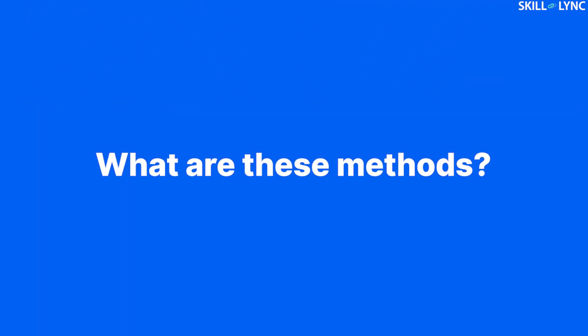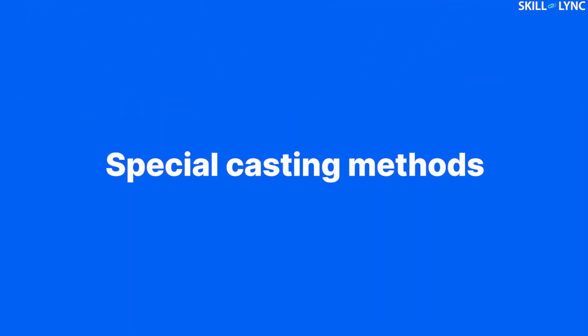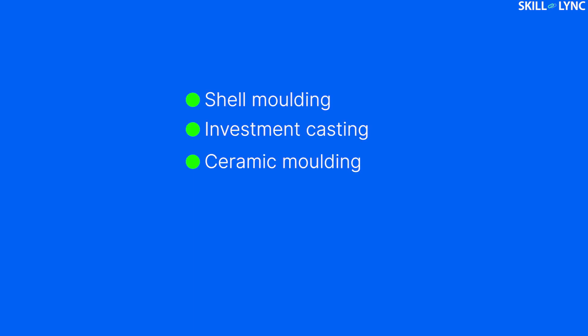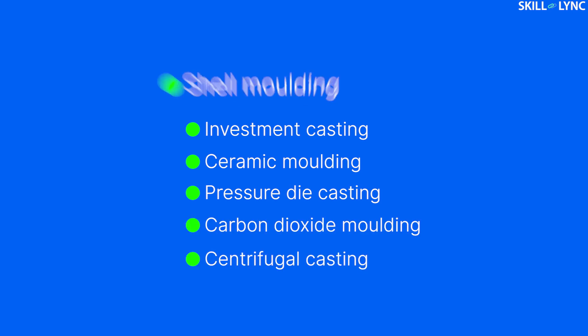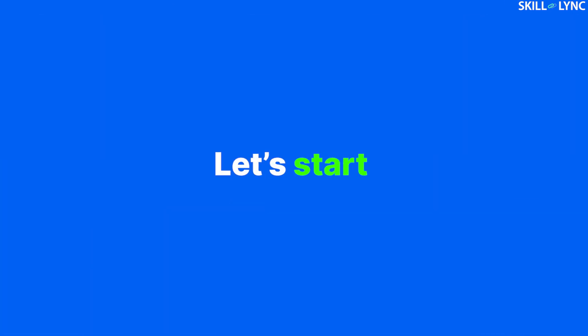So what are these methods? You'll get the answer now. The special casting methods that we will study about are shell molding, investment casting, ceramic molding, pressure die casting, carbon dioxide molding, and centrifugal casting. Today we will discuss the principles behind all these casting processes. Without any further ado, let's get into it.